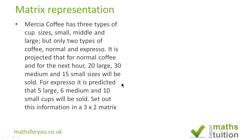Here is our problem. Looking at the last two lines in this question, it says set out this information in a 3x2 matrix. That means the matrix has got to have 3 rows and 2 columns. The first number represents the number of rows and the second number is the number of columns.